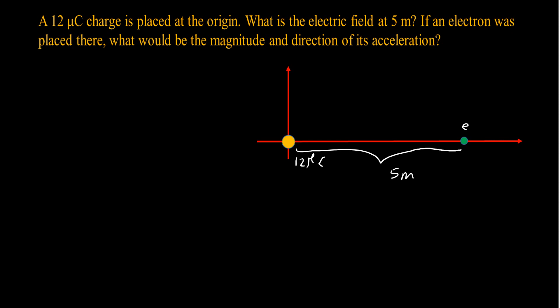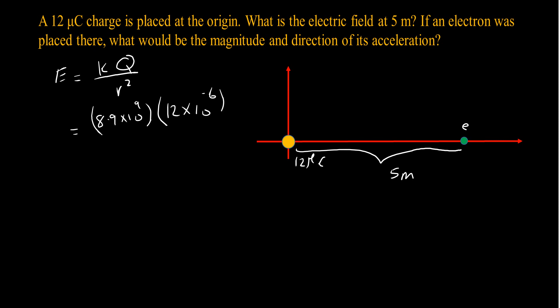Step by step: first I calculate the electric field using E equals k·Q divided by r squared. That's 8.9×10⁹ multiplied by 12×10⁻⁶, divided by 5 meters squared. Doing the math, that gives me 4.27×10³ newtons per coulomb. So now I know the magnitude of the electric field.